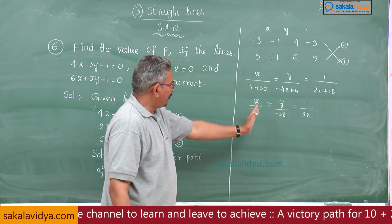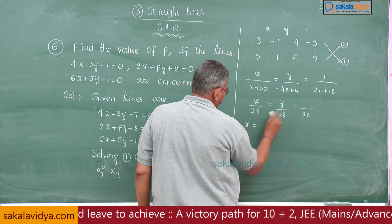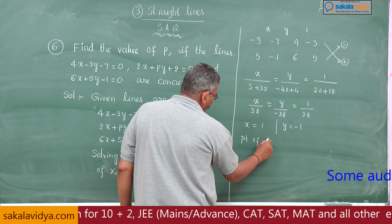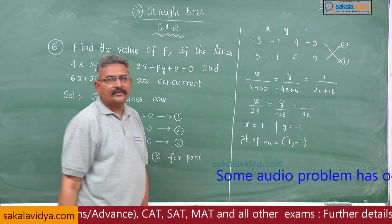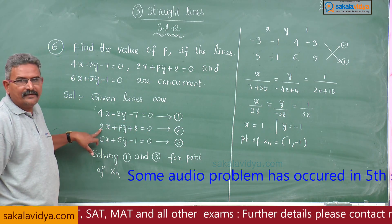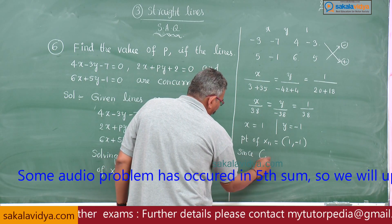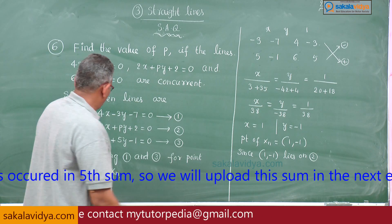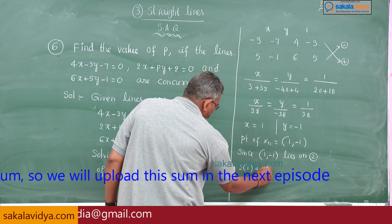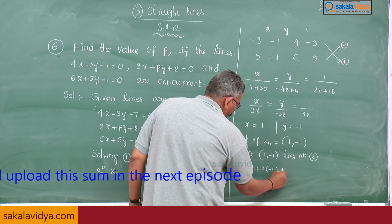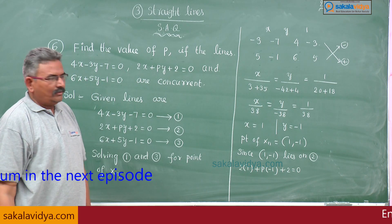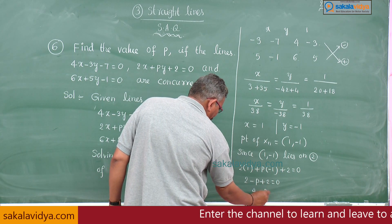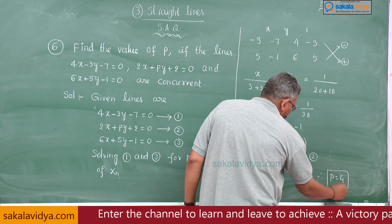Taking first and last, second and last: x is equal to 38 by 38 which is 1, y is equal to minus 38 by 38 which is minus 1. The point of intersection is equal to (1, minus 1). This point (1, minus 1) should satisfy the second equation. Since (1, minus 1) lies on equation 2: substituting gives 2 times 1 plus P times minus 1 plus 2 is equal to 0, so 2 minus P plus 2 equals 0, giving 4 equals P. Therefore P is equal to 4.